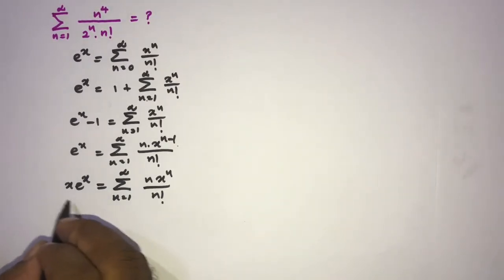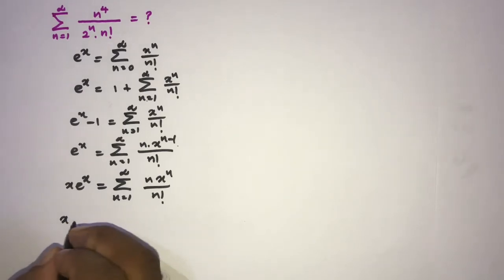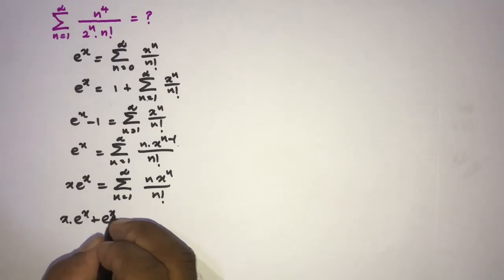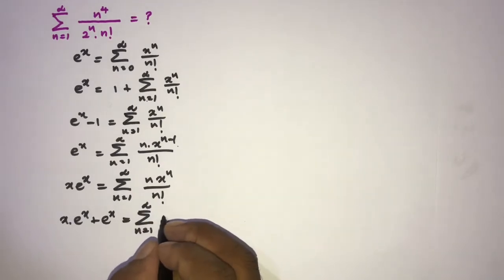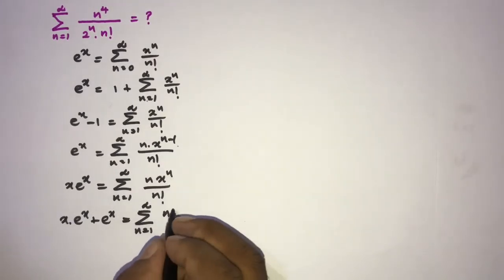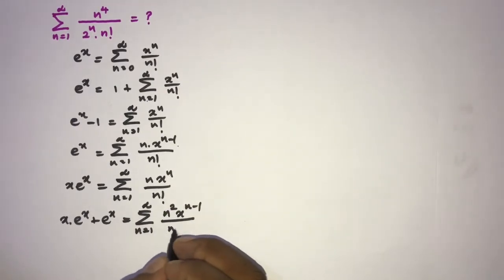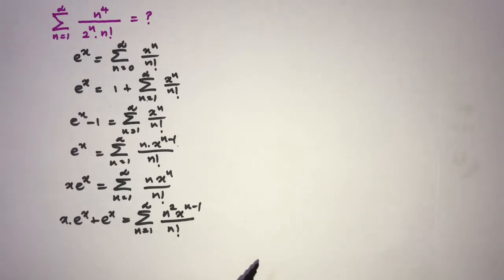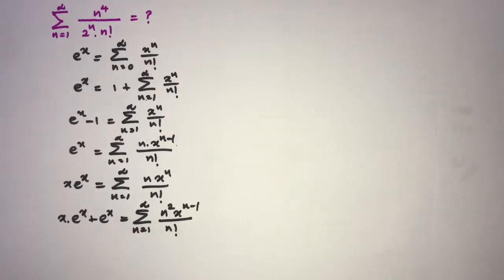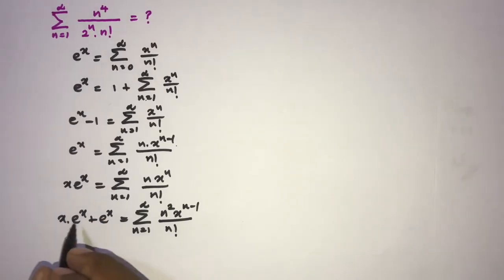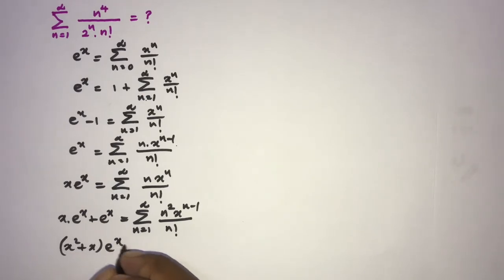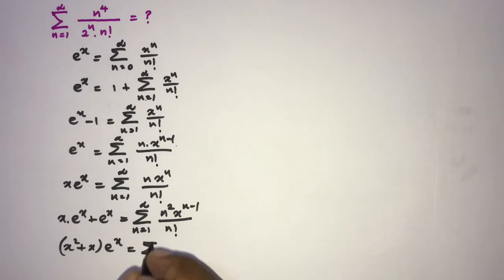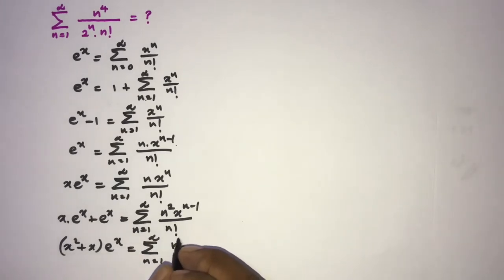Differentiate again with respect to x. Using the product rule on x·e^x: x times e^x plus e^x times 1, equals the sum from n=1 to infinity of n²·x^(n-1) over n factorial. Taking e^x as a common factor gives e^x·(x+1). Multiplying by x yields (x²+x)·e^x equals the sum from n=1 to infinity of n²·x^n over n factorial.